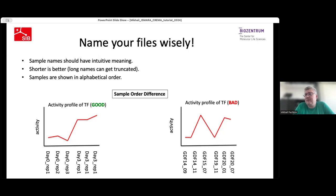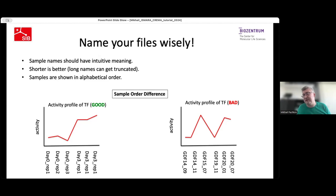The rules for naming FASTQ files are: names should be relatively short, they should have intuitive meaning, and the desired order of samples you'd like to see in the report should follow alphabetical order. One important thing about very long sample names is that when they are shown on plots, very long names get truncated, which also reduces the ability to understand data correctly.